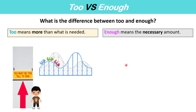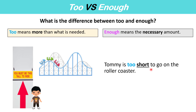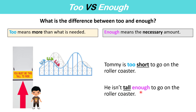So what is the difference between 'too' and 'enough'? 'Too' means more than what is needed, and 'enough' means the necessary amount. Imagine this little boy wants to go on a roller coaster, but you must be a certain height to ride. Tommy is too short to go on the roller coaster — he isn't tall enough. This means he is shorter than he must be and doesn't have the necessary height.